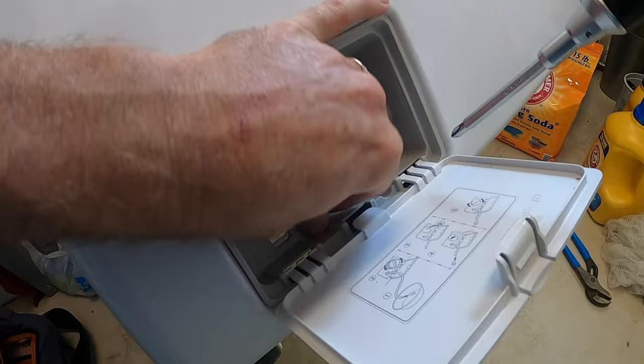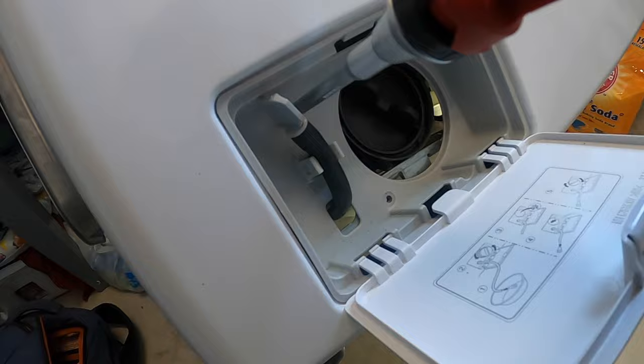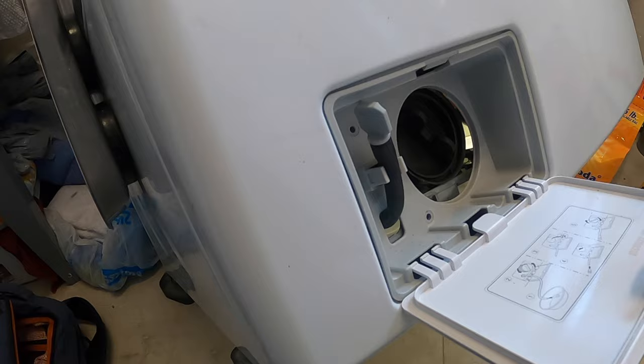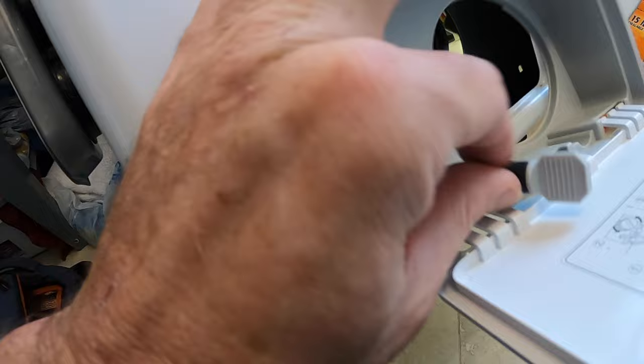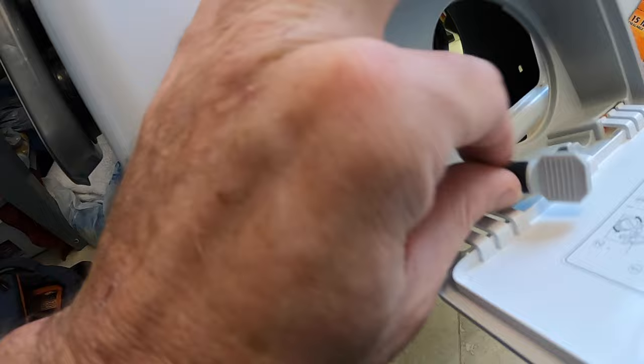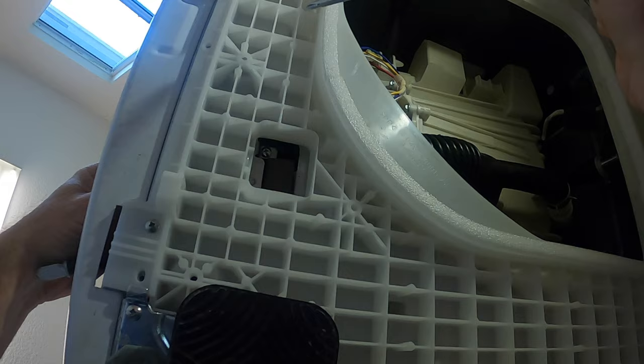Removing the two screws allows you to remove the facade and gain access to three screws that hold the drain pump in place. When I opened it up, I noticed the screws were missing and the coin catch opening was out of alignment.